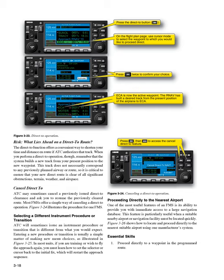Proceeding directly to the nearest airport: one of the most useful features of an FMS is its ability to provide you with immediate access to a large navigation database. This feature is particularly useful when a suitable nearby airport or navigation facility must be located quickly. Figure 3-26 shows how to locate and proceed directly to the nearest suitable airport using one manufacturer's system.